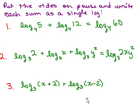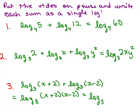And the last one, we're going to multiply that out because it's adding two separate logs. So I need to multiply x plus 2 times x minus 2 and x plus 2 times x minus 2 is x squared minus 4.